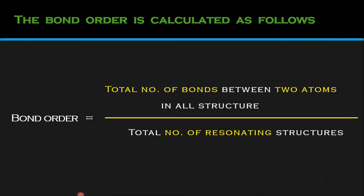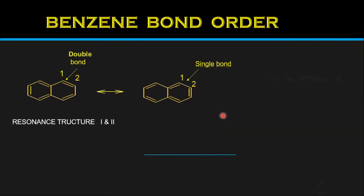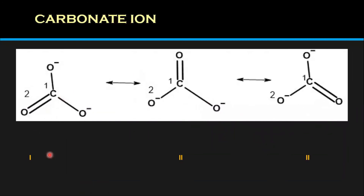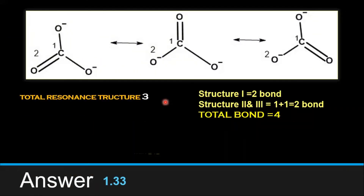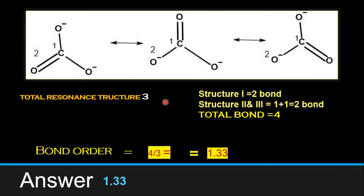Next, the carbonate ion (CO₃²⁻). Three resonance structures are possible for the carbonate ion. Fixing a position and counting the bonds across all 3 structures gives: 2 + 3 + 4 = 4 total bonds at that fixed position — note that wherever you choose the position the count remains the same. The total number of bonds is 4, and the number of resonance structures is 3, so the bond order is 4 divided by 3 = 1.33. The carbonate ion has a bond order of 1.33.